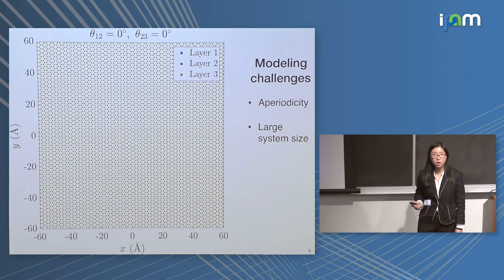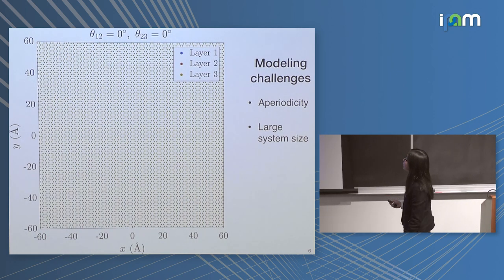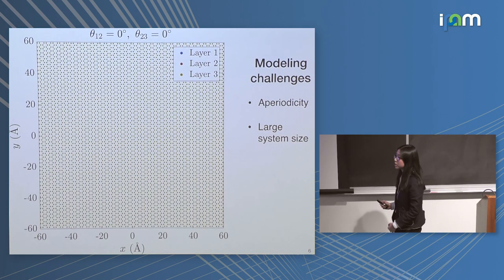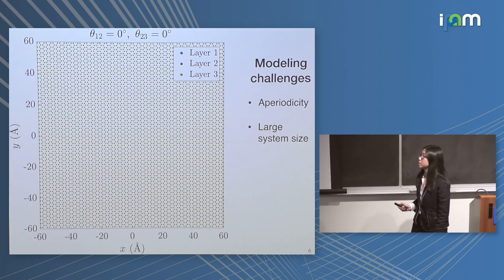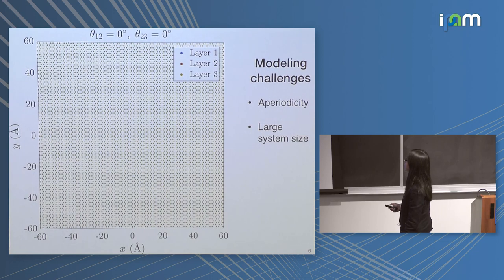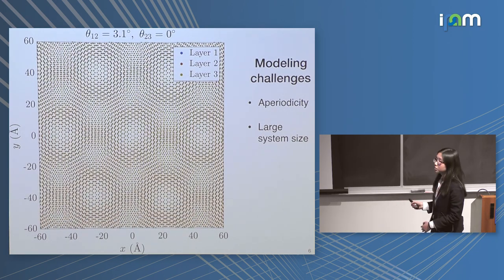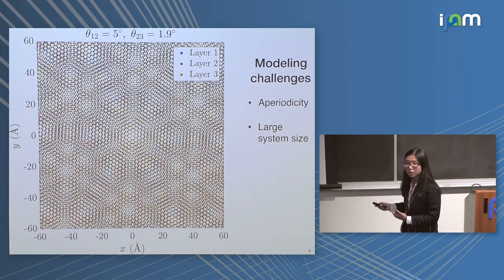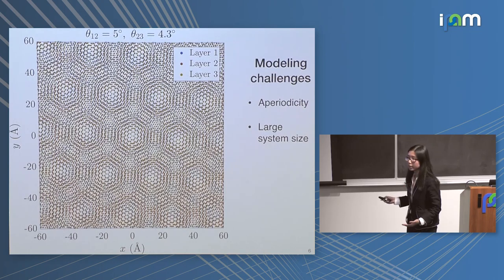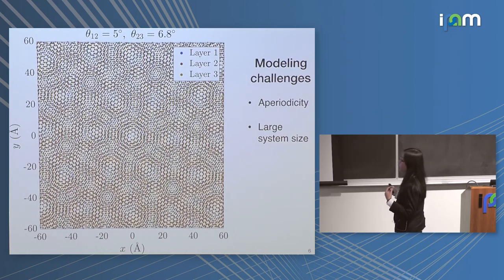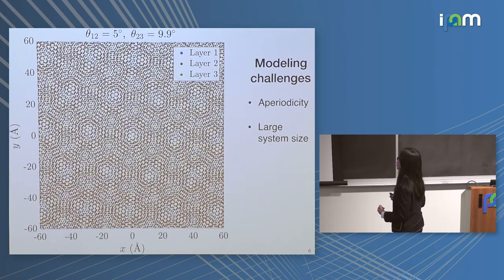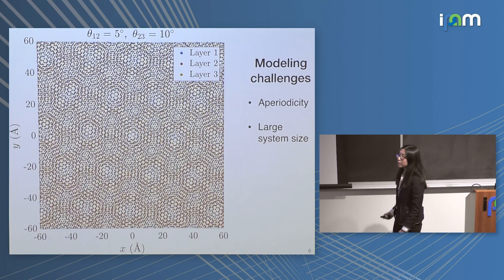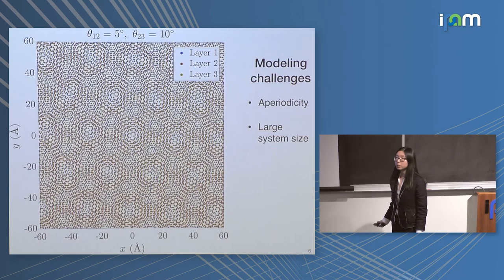From a modeling point of view, it's actually very difficult to model, and the reason is that the system is generally aperiodic — even in the continuum limit, as opposed to twisted bilayer graphene where you can always approximate a supercell. As you increase one twist angle, the moiré periodicity becomes smaller and smaller. And as you start to rotate the third layer, the moiré pattern gets more complicated — the higher-order moiré patterns don't continually deform into each other. So we really don't have a supercell description in general for general twist angles.